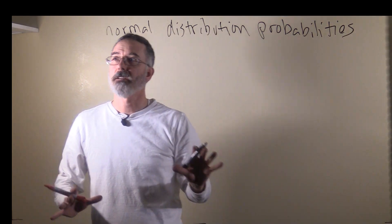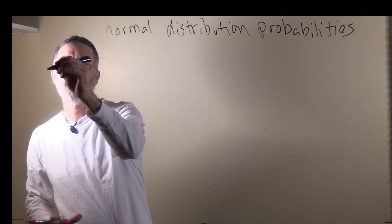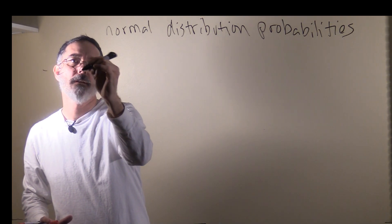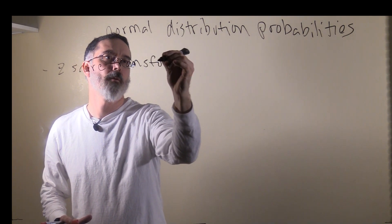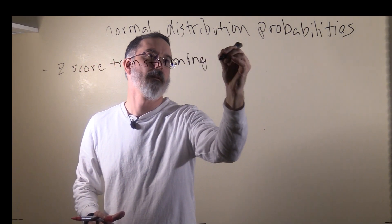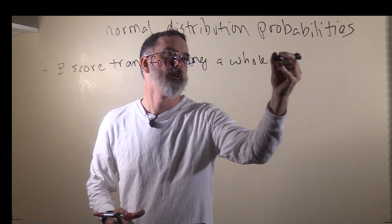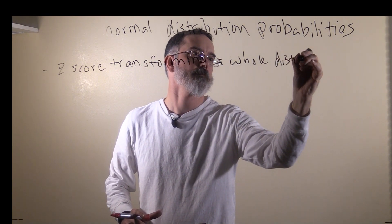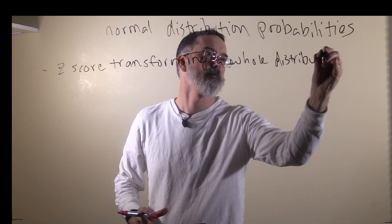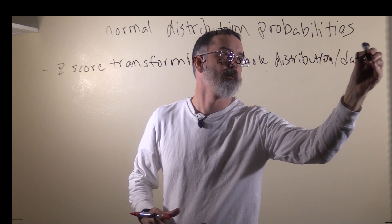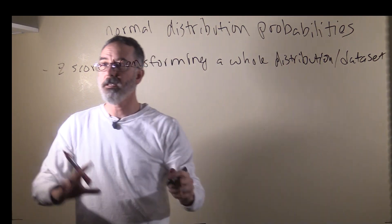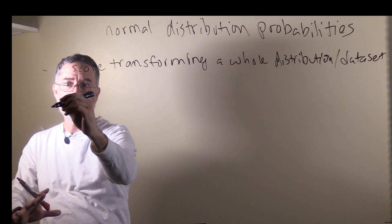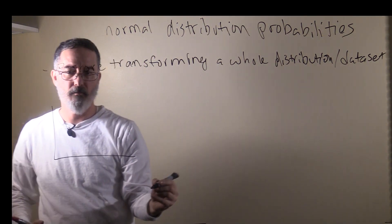To understand this, there's actually something I want to talk about briefly first, which is z-score transforming a whole distribution, or equivalently, a data set. Let's stick with a familiar example of women's height.